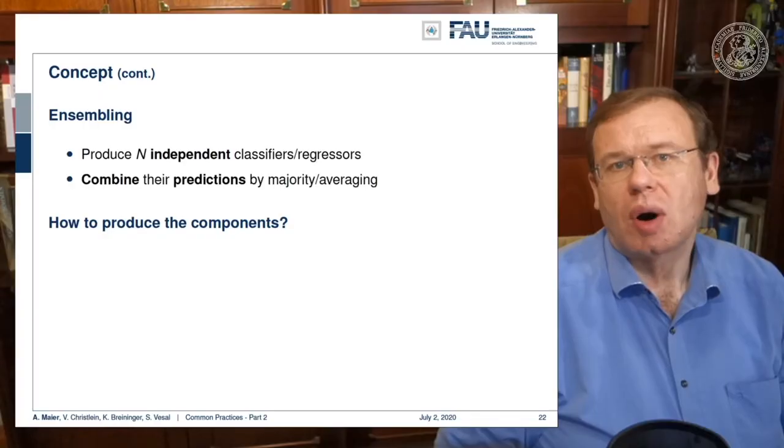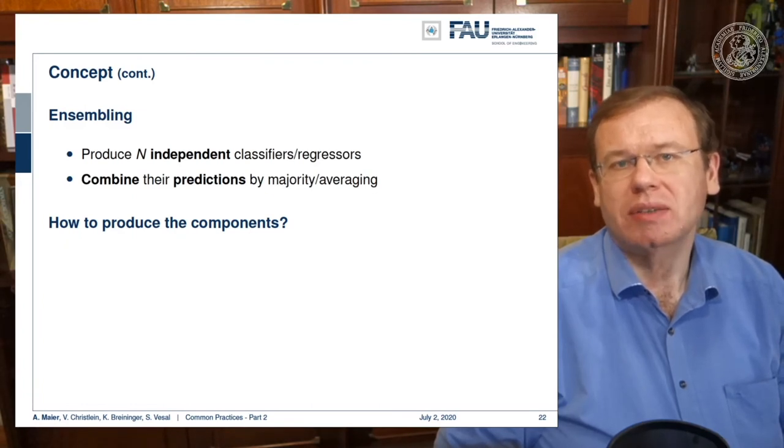So how do we then implement this concept? We somehow have to produce N independent classifiers or regressors, and then we combine the predictors by majority or averaging. How can we actually produce such components? Well, you can choose different models.